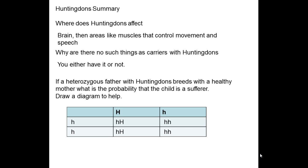So if a heterozygous father with Huntington's breeds with a healthy mother, what is the probability that the child is a sufferer? Draw a diagram to help. A heterozygous father — heterozygous meaning that he has got two different alleles in his genotype — so big H, small h. So in half his sperm he has the big H, which is causing Huntington's, and in the other half he has the small h allele, which means it is healthy. The mother has the genotype small h, small h, so in all of her eggs she carries small h. You can see that two of the offspring will be completely healthy and two will be sufferers. Therefore it is 2 from 4 — so the probability is 50%.